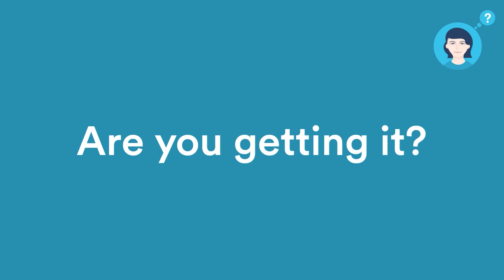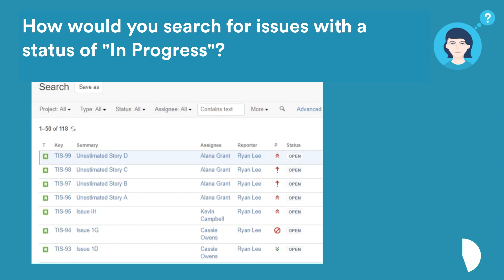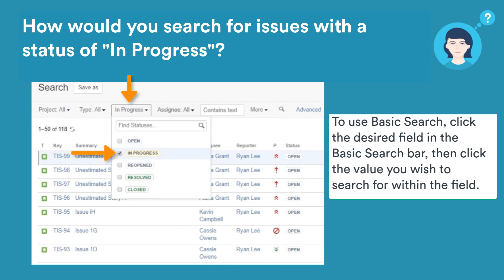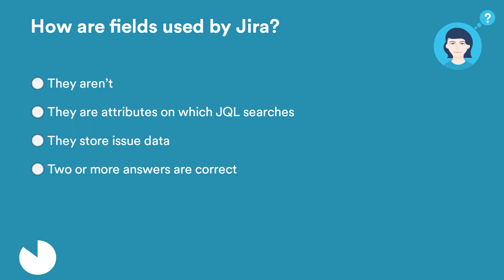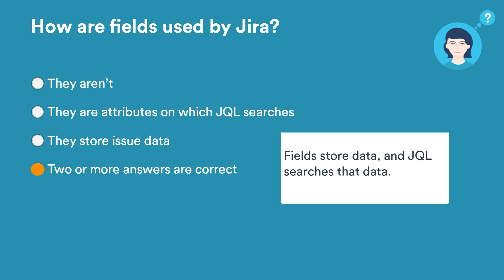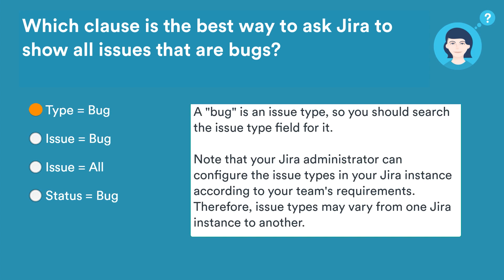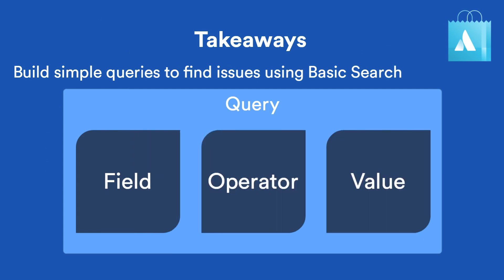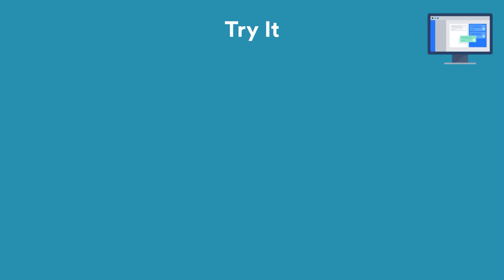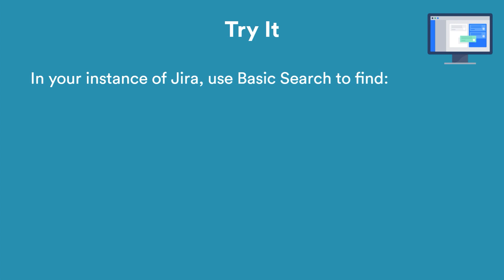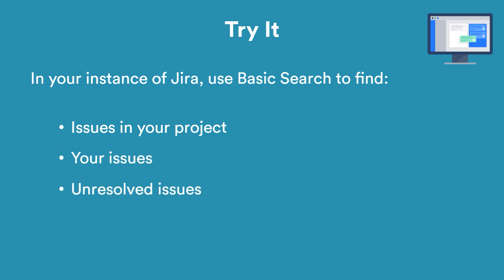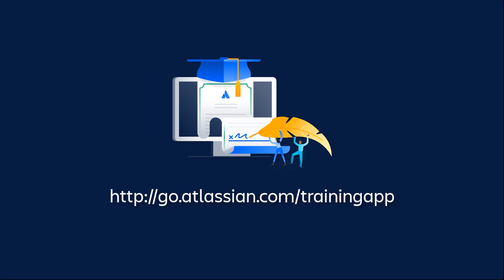Let's take a few moments to review what we have learned. In this tutorial, you've learned to build simple queries to find issues with Jira's basic search. Take some time to apply what you've learned in your own project — open your instance of Jira and go to the Issue Navigator. Use basic search to find issues in your project, your issues, and unresolved issues. Check out Atlassian University for more great Jira tutorials.